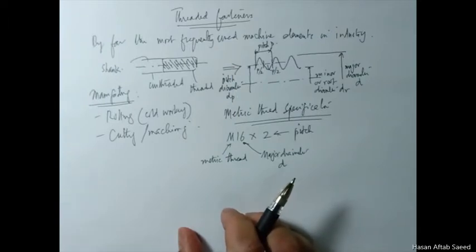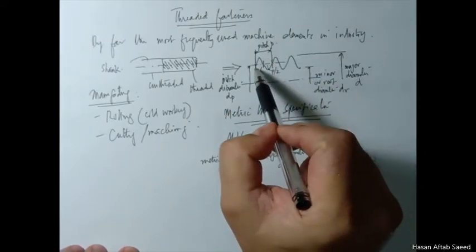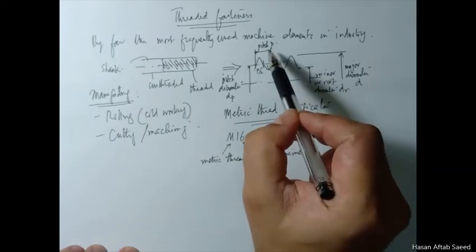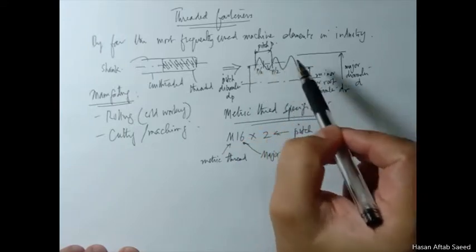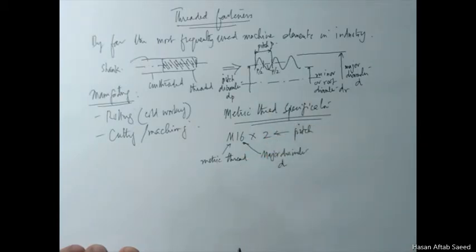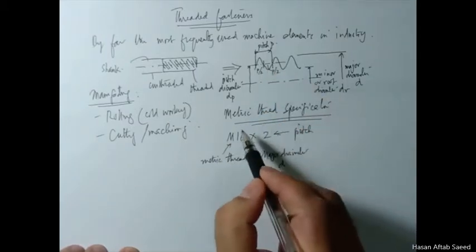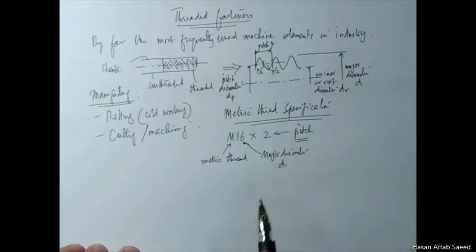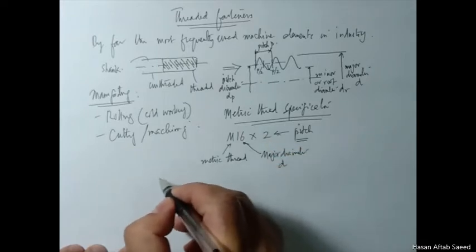The 16 gives you the major diameter D, and the 2 is the pitch — which we have already defined as the distance between one point and its corresponding point on the very next thread. Now if it's a single-start thread, meaning there is just one helical thread, then your pitch is also the distance that your nut or bolt advances in the axial direction in one revolution.